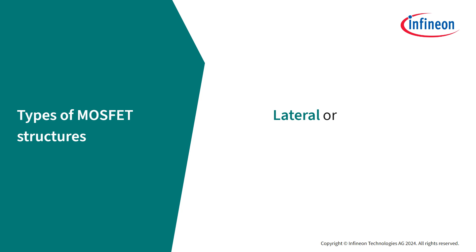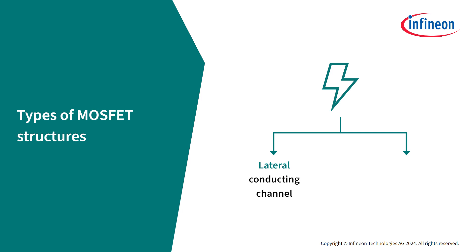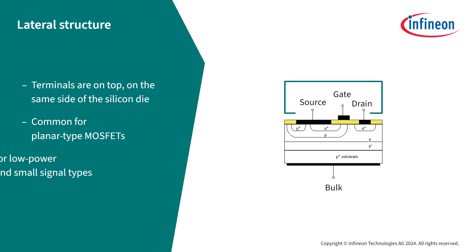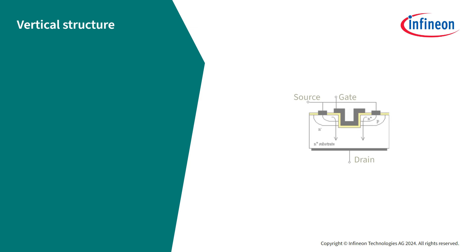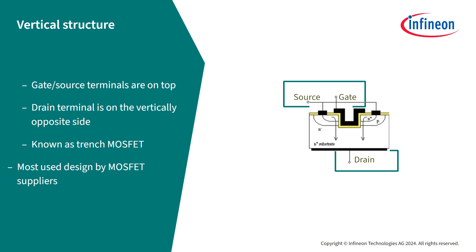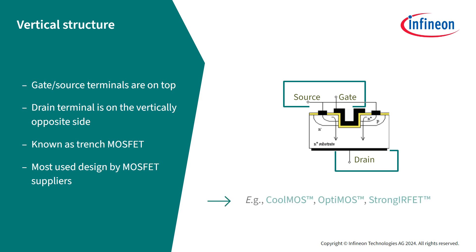MOSFETs can also be lateral or vertical when it comes to their structure, meaning the conducting channel is either lateral or vertical. In the lateral structure, all three terminals are on top and on the same side of the silicon die — very common for planar type MOSFETs, still used for low-power and small signal types. In vertical type MOSFETs, the gate and source terminals are usually on top while the drain terminal is on the vertically opposite side. This type is known as a trench MOSFET and is the most used design today. For example, CoolMOS, OptiMOS, and StrongerFET are all vertical type trench MOSFETs.